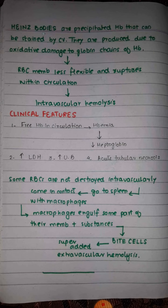Heinz bodies are precipitated hemoglobin stained by crystal violet, produced due to oxidative damage to the globin chains. When Heinz bodies damage the red blood cell membrane, red blood cells become less flexible and rupture inside the blood vessels, causing intravascular hemolysis. There is also superimposed extravascular hemolysis: red blood cells that are not destroyed intravascularly go to the spleen, where macrophages engulf part of their membrane; these partially-damaged cells are known as bite cells.